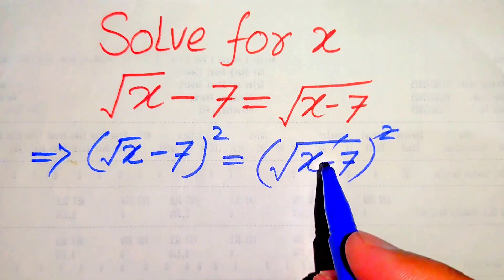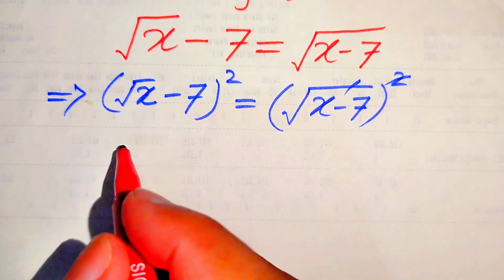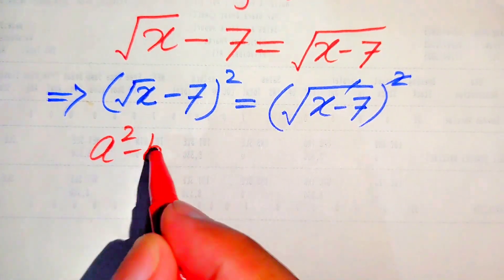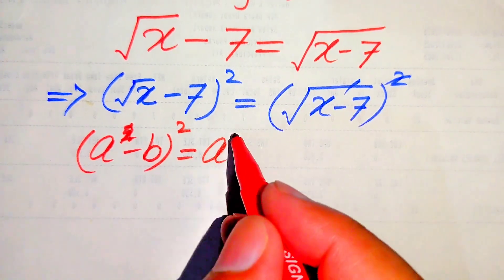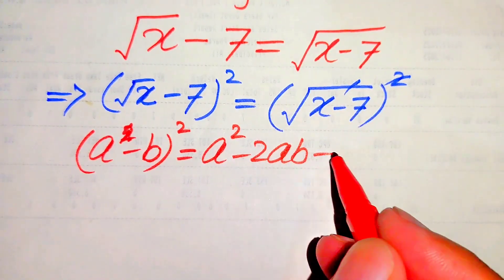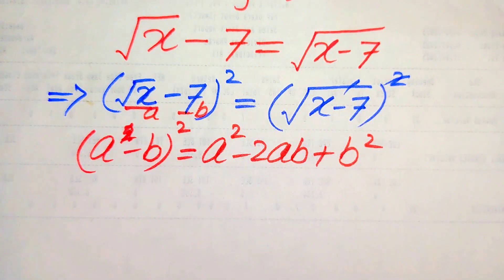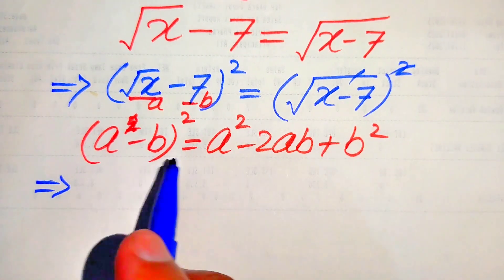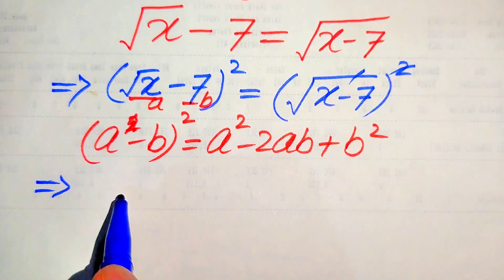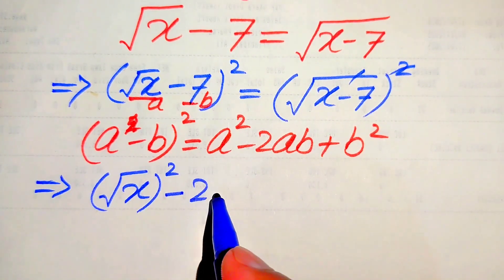You see here this square is cancelled out by this square. Now on the left hand side we use the algebraic formula: a minus b whole square equals a squared minus 2ab plus b squared. Here this is the value of a and this is the value of b. According to these two values of a and b, we put them into this formula. Here our a is square root of x and its whole square.